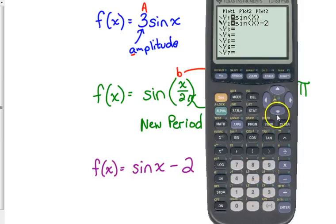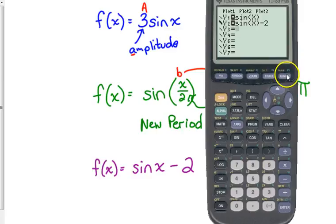Change y2 to sine of x — make sure you close the parentheses after the x, because the minus two is not inside the sine function; it's on the end. Only if there were parentheses around x minus two would the minus two be inside the sine. So: sine of x, close parentheses, minus two. Graph it.